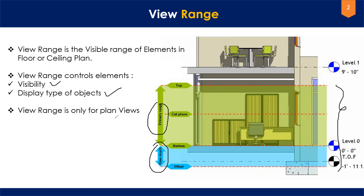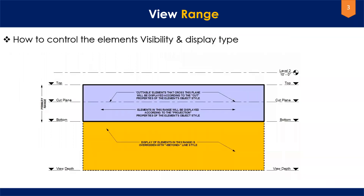An important point: view range is only for plan views — it can be a ceiling plan or a floor plan, not for section, elevation, or 3D views. For those views it is not applicable. Now let's talk about visibility. You have to be aware of where your element is lying — either between the bottom and the view depth, or between the cut plane and the top. For example, if an element like a duct or pipe is lying between the bottom and the view depth, let me open Revit to explain this.